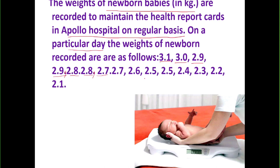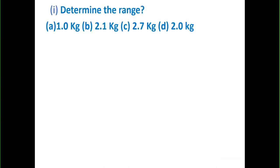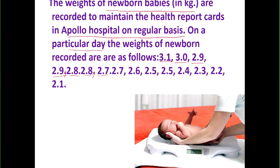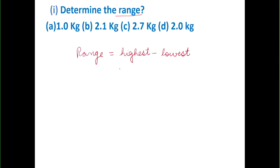The first question is: determine the range. Range is the highest value from our data minus the lowest value. The data has been arranged in descending order, so the highest value is 3.1 kg and the lowest value is 2.1 kg. Therefore the range is 3.1 minus 2.1, which is undoubtedly 1 kg. The answer is 1 kg.